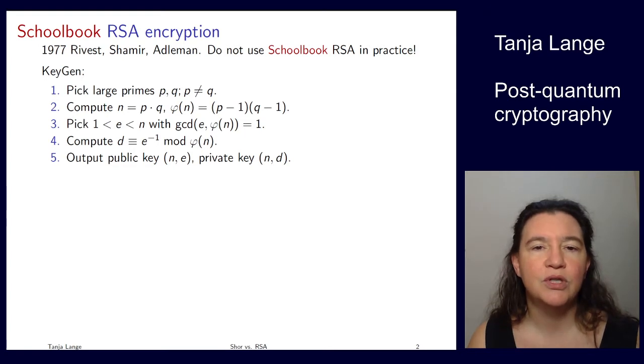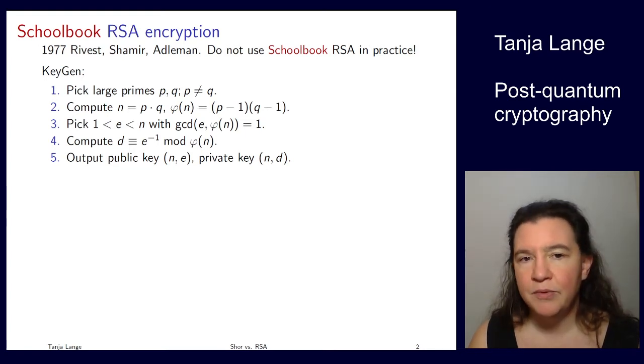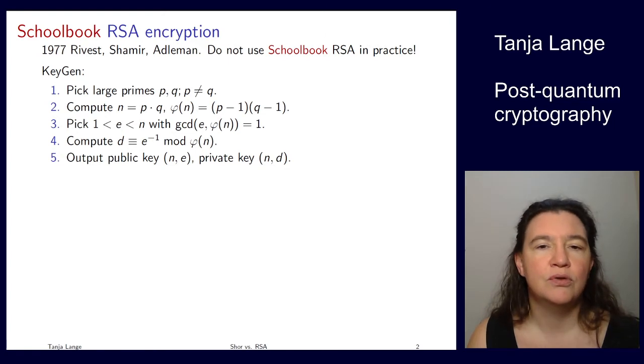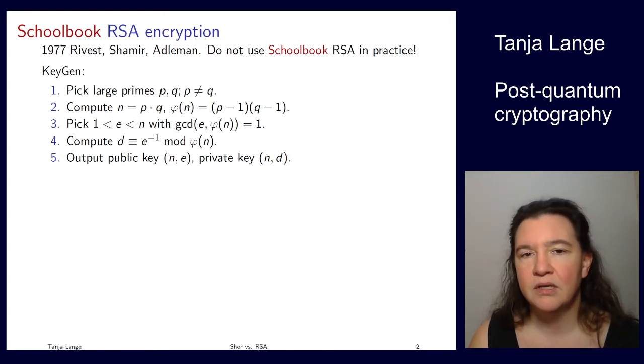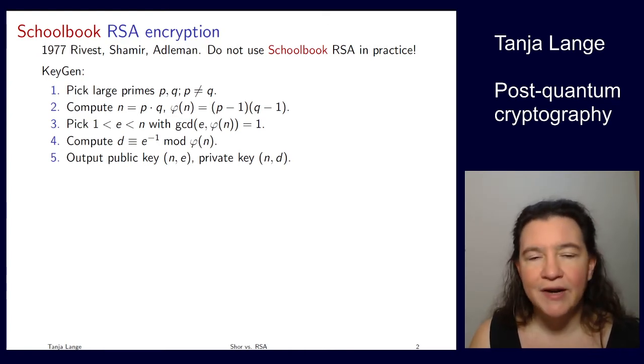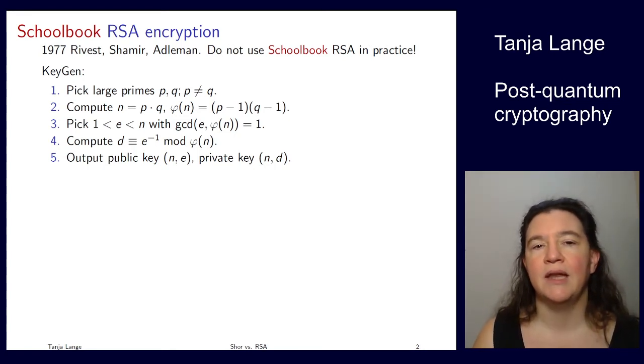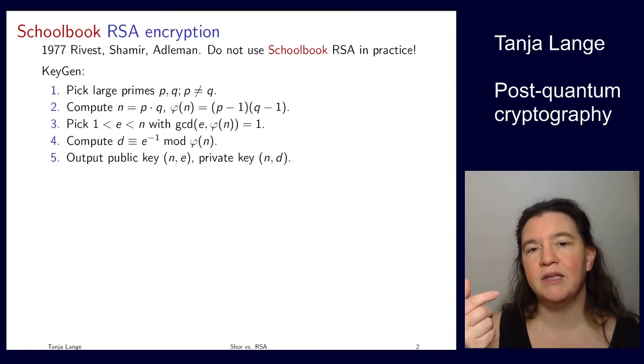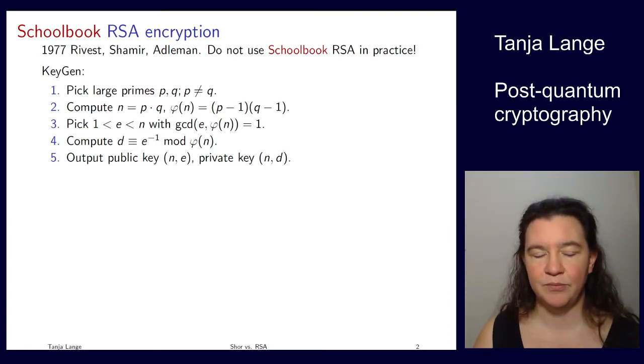Some exponent which is coprime to it. We typically pick something there which has a low Hamming weight, so 2^16 + 1 is a typical choice. And that is also sufficiently large that it is very likely to be coprime to phi(n). Then we compute the inverse of e modulo this number and take (n,e) as a public key and (n,d) as a private key.